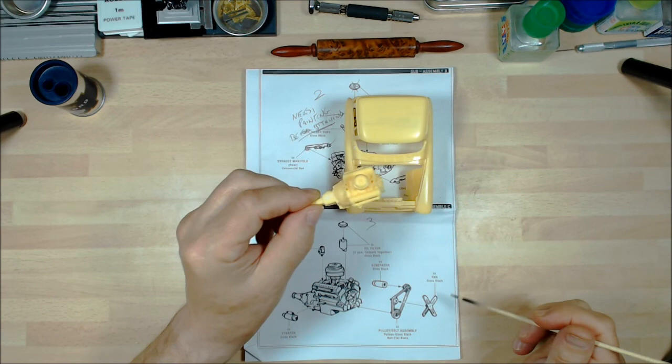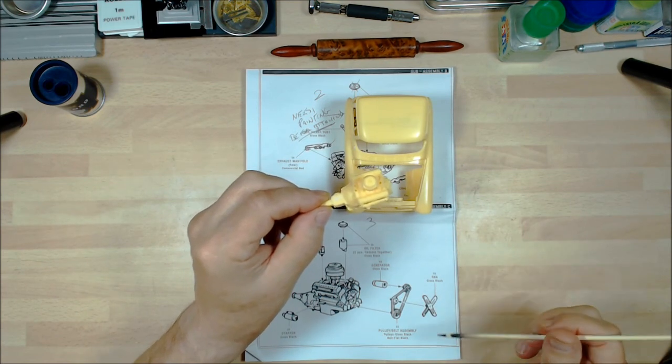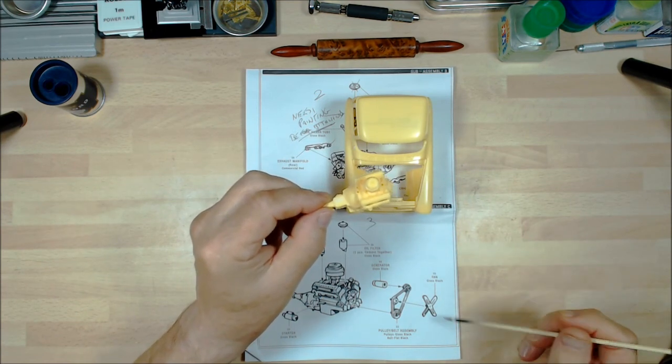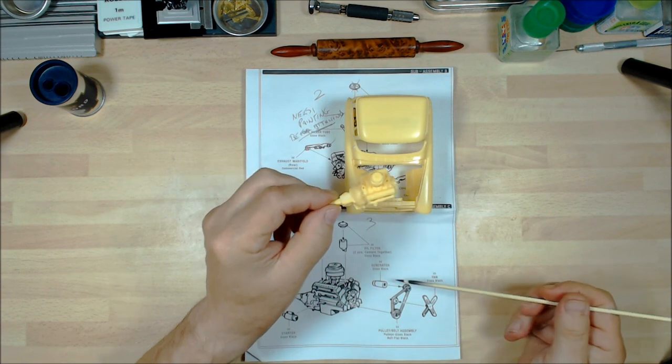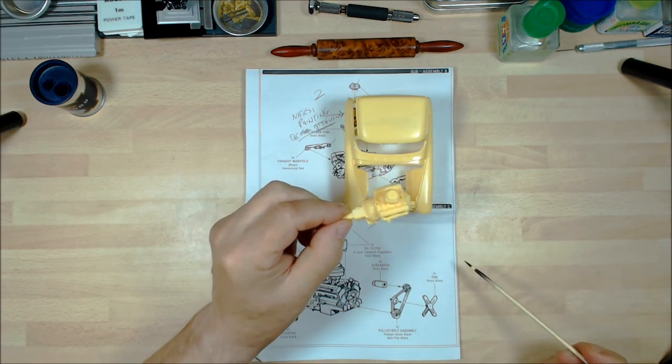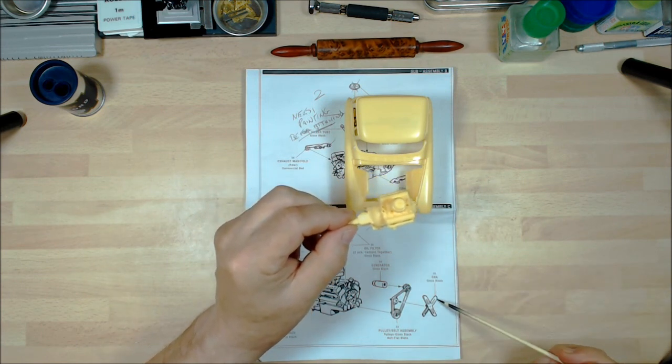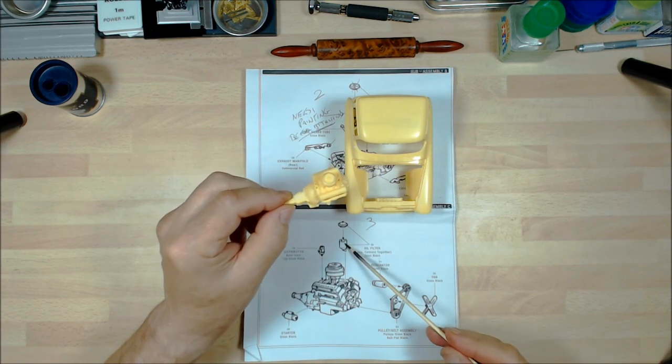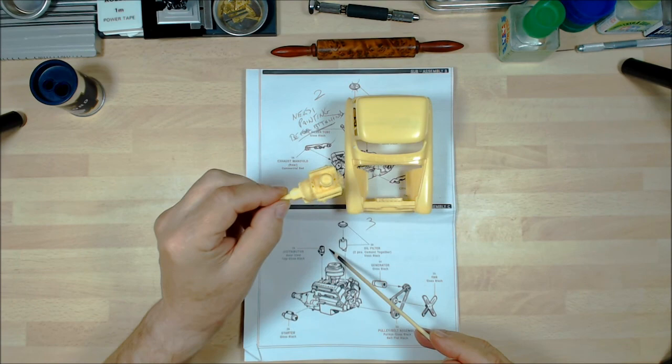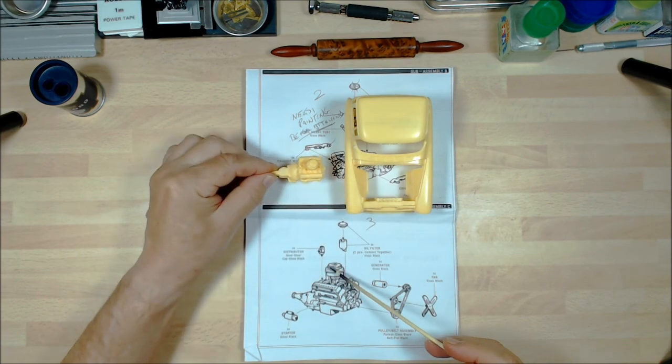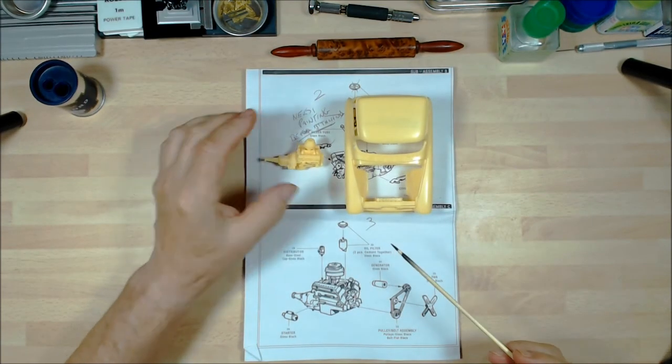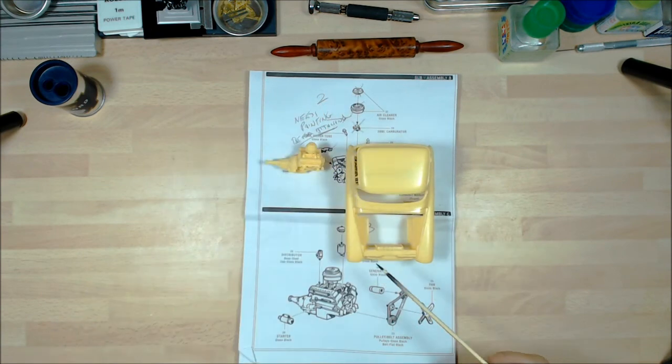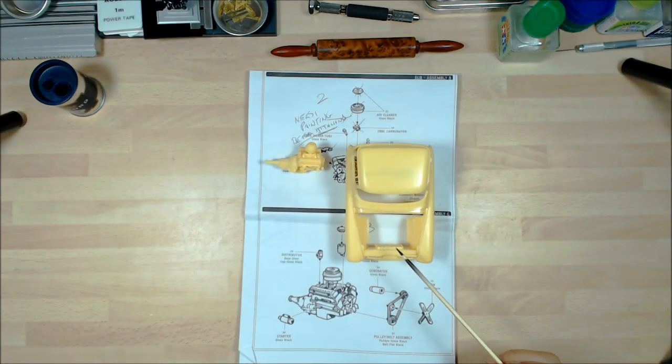I've got some detail bits like the distributors, the oil filler, oil filter that's going to have a lead come off it. There's the starter, the generator, the fan and pulleys, and the gloss black for the actual fan itself.